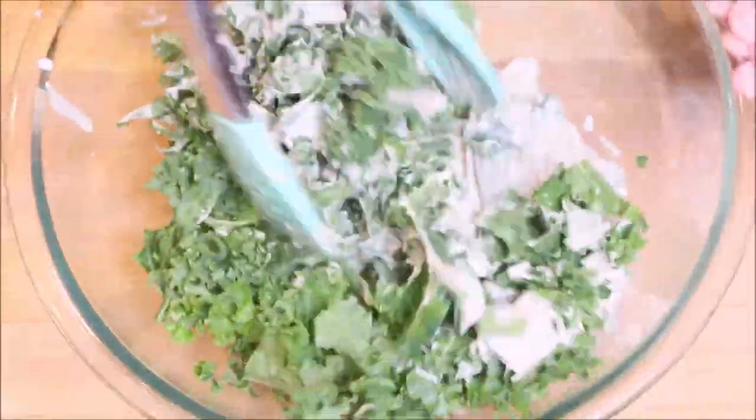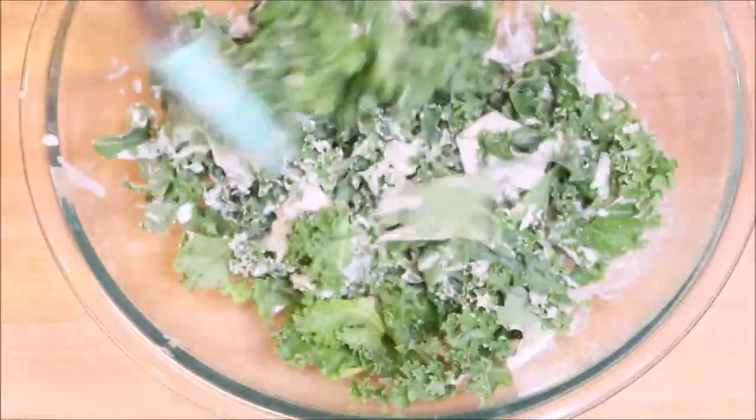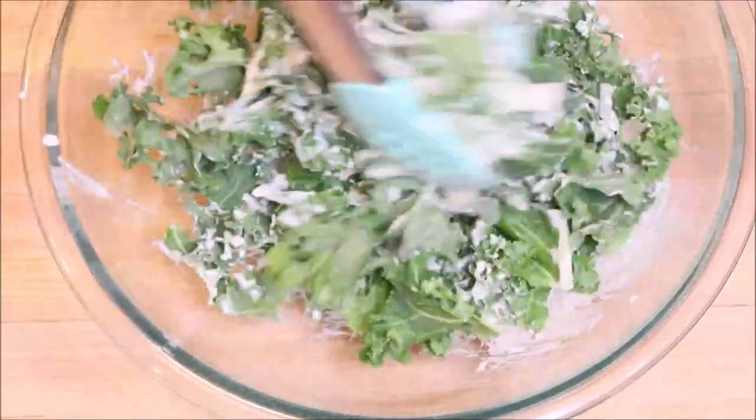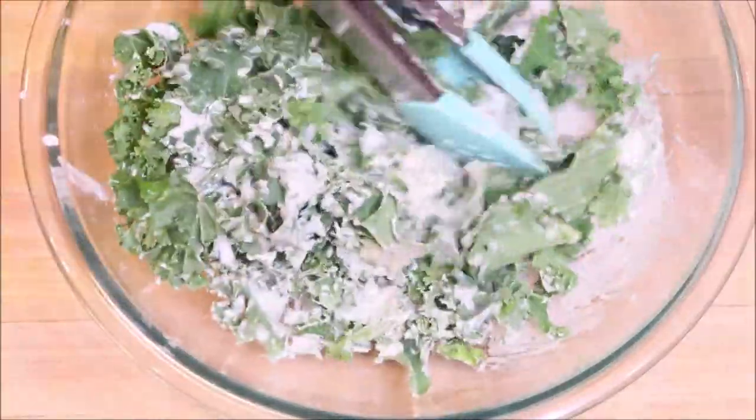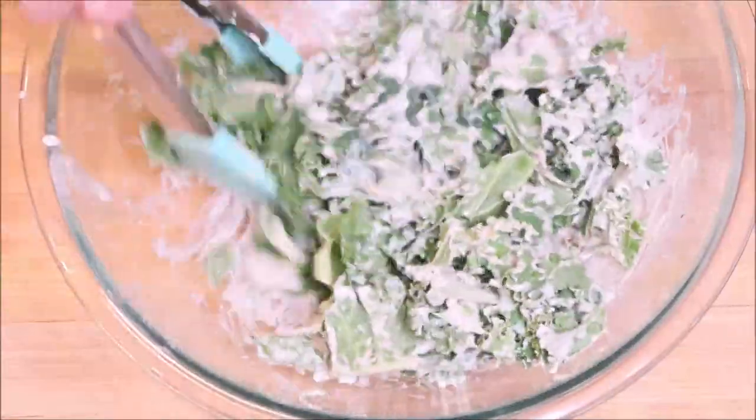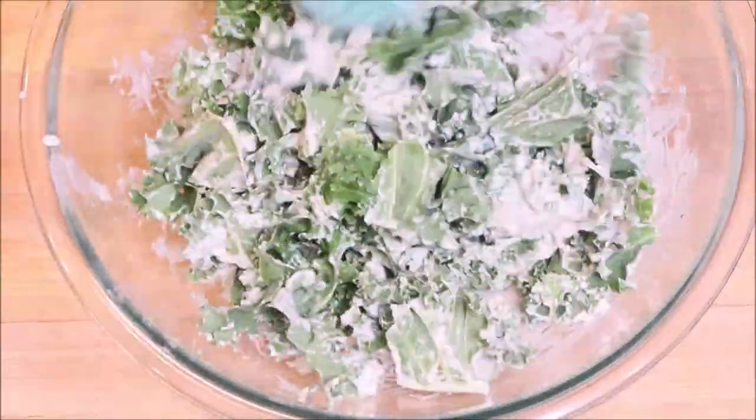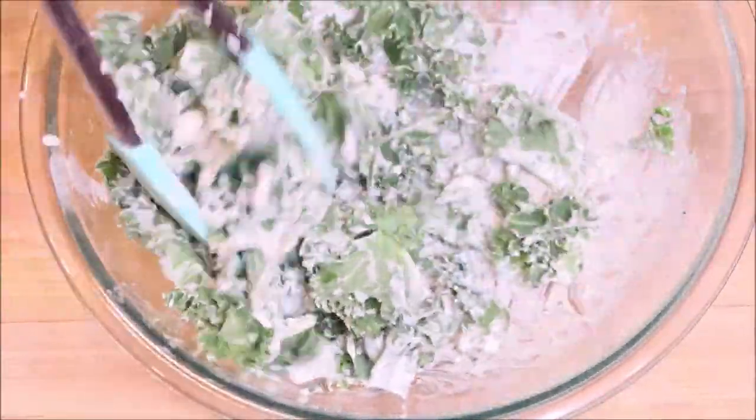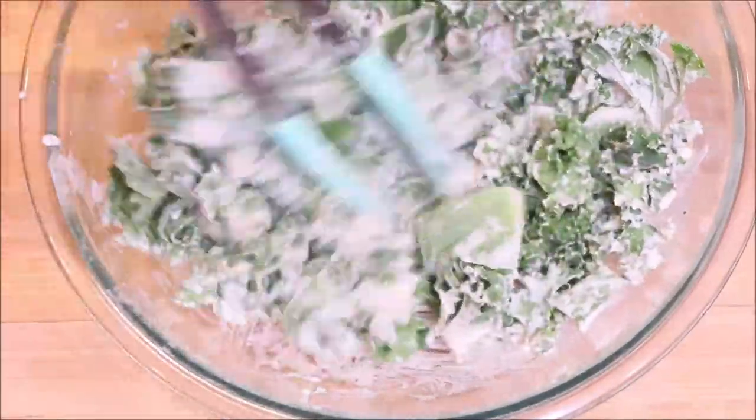Once we get this all mixed together, we're going to set it aside and let it marinate while we're cooking our chicken and tortillas. If you notice any thick stems, just pull them out. Nobody wants to chew on thick kale stems.